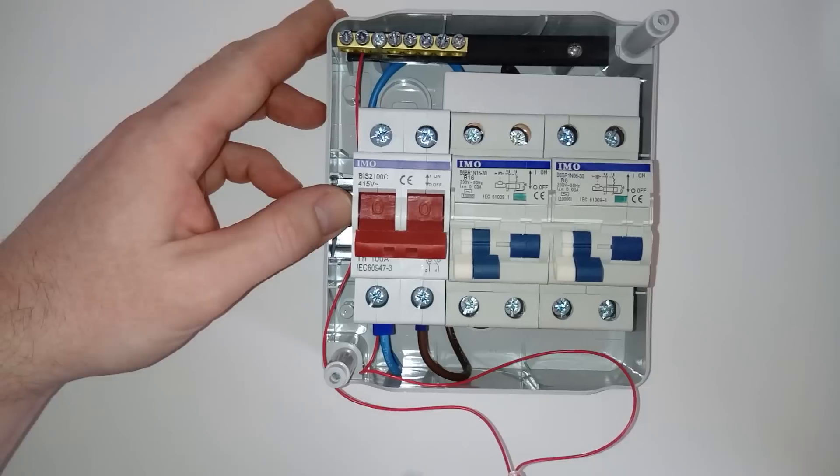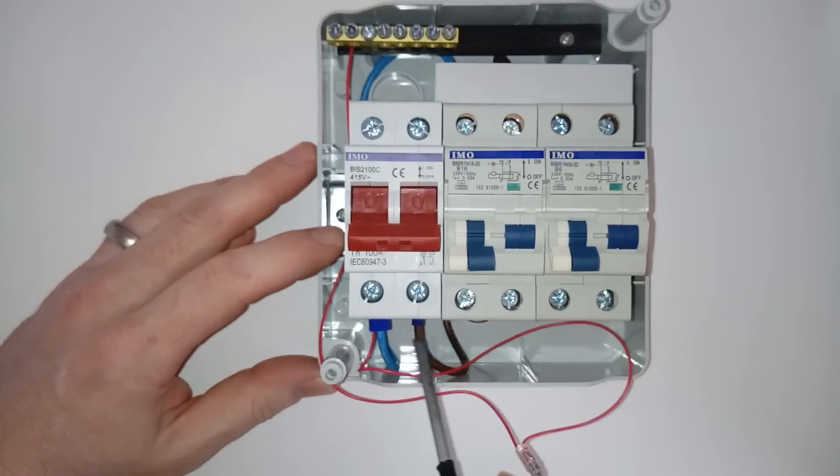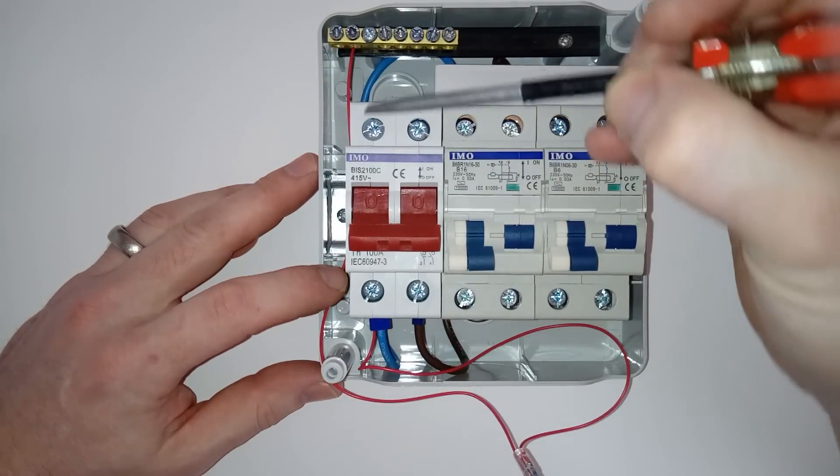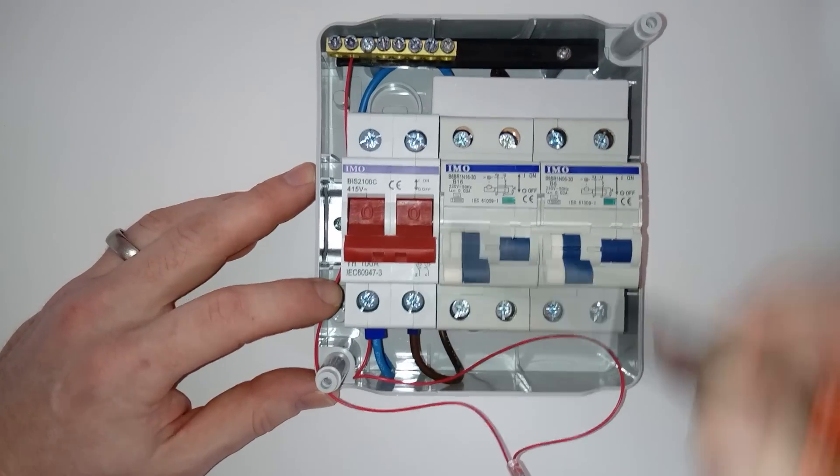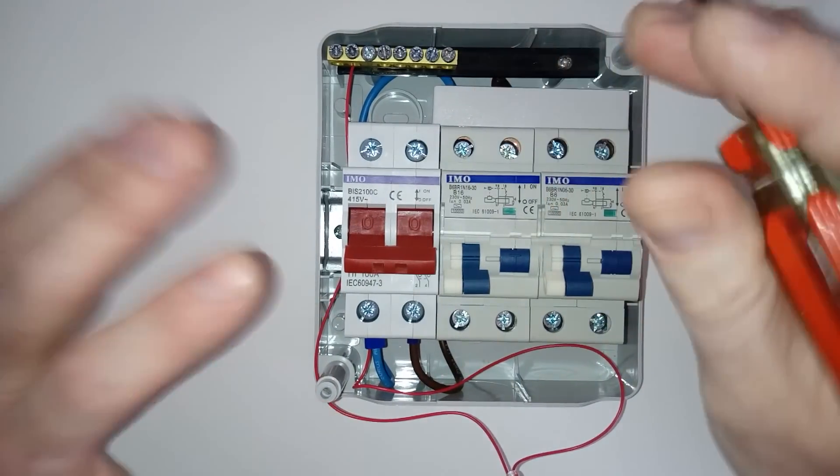And all you've got to do is copy what you've got at the bottom here, your negative and your live. So on line with that you'll have your negative, on line with that one you'll have your live in. Once you've put your two wires in there and your earth wire up there, that part's done.